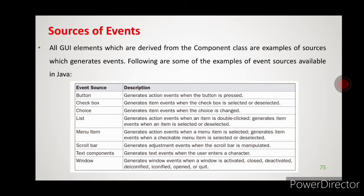Next is choice — it will also generate item events. Choice is nothing but radio buttons. For example, when filling a registration form it may ask male or female, and we use radio buttons for that. Only one selection can be made, so we use choice or radio buttons, and this generates an item event.